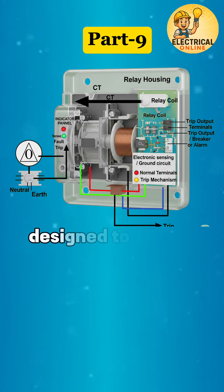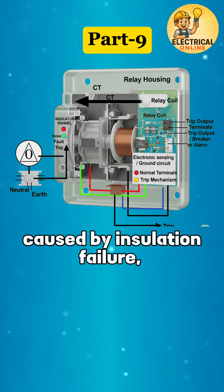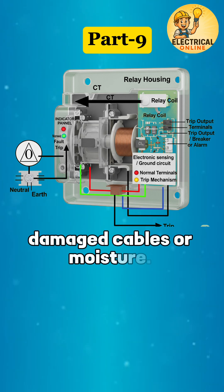It's a protective device designed to detect small leakages of current from live parts to earth, caused by insulation failure, damaged cables, or moisture.